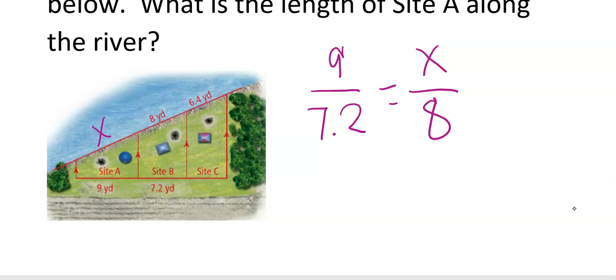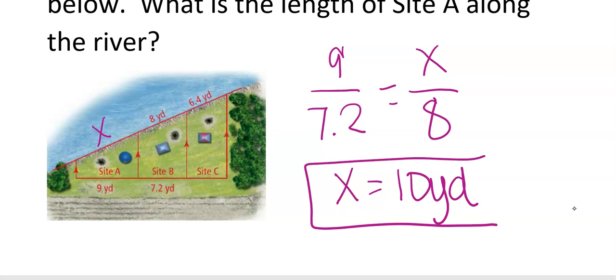This one you can go directly to the answer because it is a very basic cross multiplication question. So 9 times 8 is 72. 72 divided by 7.2 is 10. Label it whatever the label is, 10 yards.